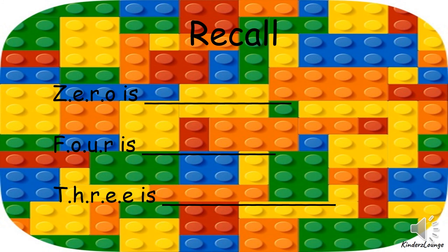Now it's time to recall the spellings of number words. Let's find out how much you have learned. Z E R O is zero. F O U R is four. T H R E E is three. Well done!